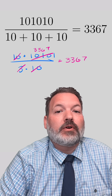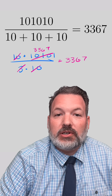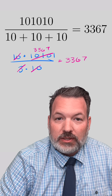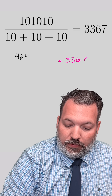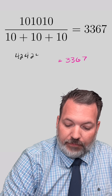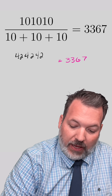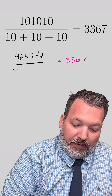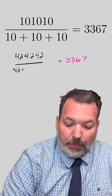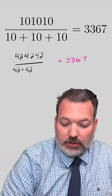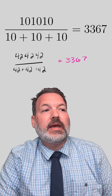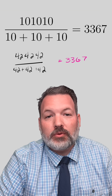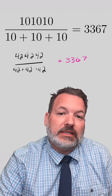The same answer for any two-digit number that we do this with. If we took 42, 42, 42 and divided by 42 plus 42 plus 42, we would get 3,367.